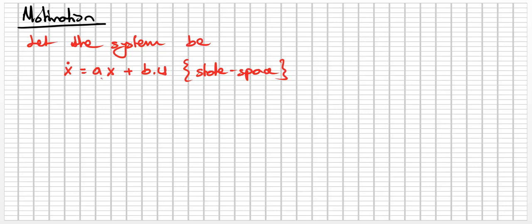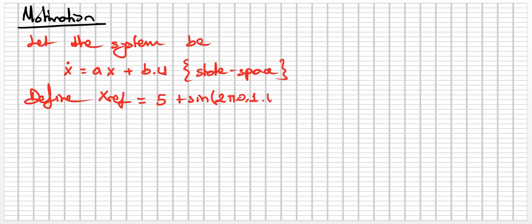How can we use this system in order to control it or drive it to a reference point? For example, we can define x_ref — say, equal to five, or a sinusoidal signal 2π·0.1·t. Our purpose here is to drive the whole system to this reference point x_ref, so we need to use a controller approach.